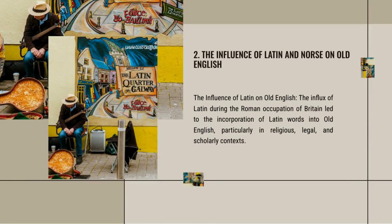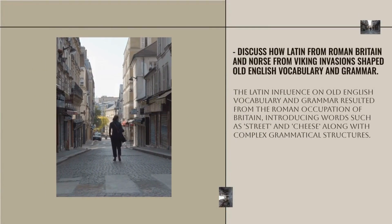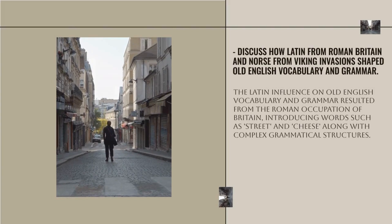The influx of Latin during the Roman occupation of Britain led to the incorporation of Latin words into Old English, particularly in religious, legal, and scholarly contexts. This Latin influence on Old English vocabulary and grammar introduced words such as 'street' and 'cheese,' along with complex grammatical structures.